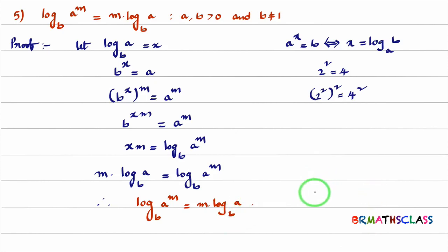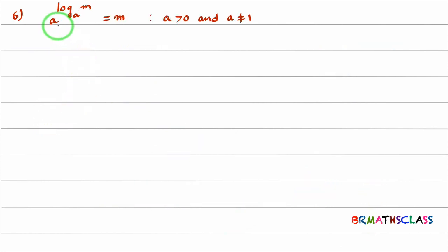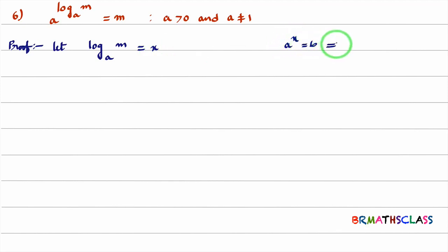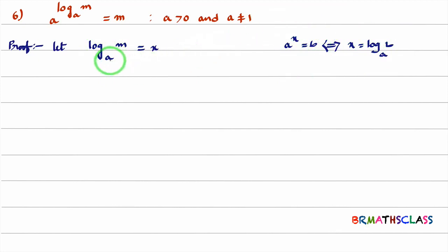Now we will see the proof of the sixth property. The sixth property: a^(log m base a) = m. To prove this result, I'll take log(m) base a as x. From the definition of logarithm, whenever you see a^x = b, you can write x = log(b) base a. At the same time, whenever you see x = log(b) base a, you can write a^x = b. So if I write this in exponent form, base power x — that means a^x = m.